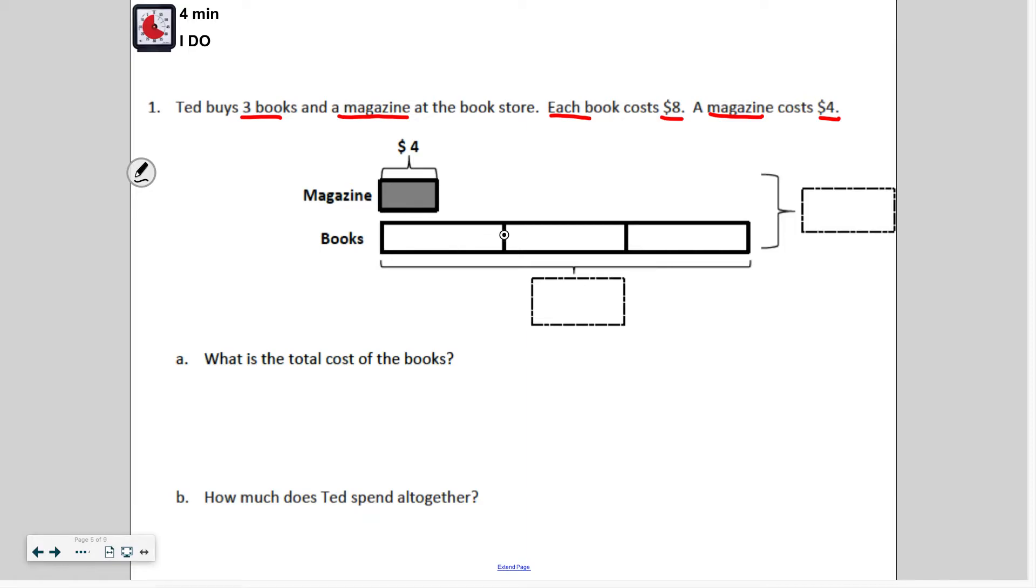That's why it's a two-step problem. I need to find the cost of the books and then add that to the cost of the magazine to find the total cost. The questions are: what is the total cost of the books, and how much does Ted spend altogether? I'll fill this in with 8, 8, and 8. If I skip count by 8, 8 plus 8 is 16, and 16 plus 8 is 24. So the books alone cost $24. The total cost of the books is $24.